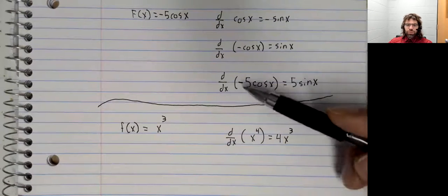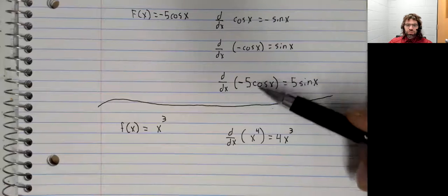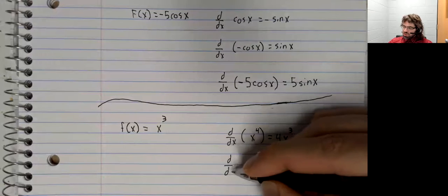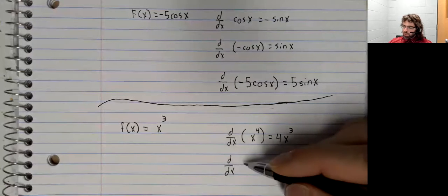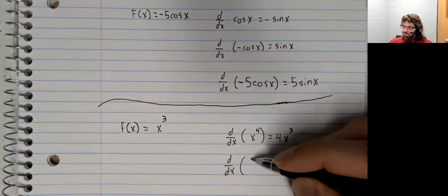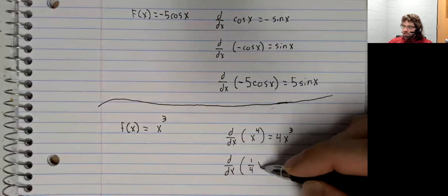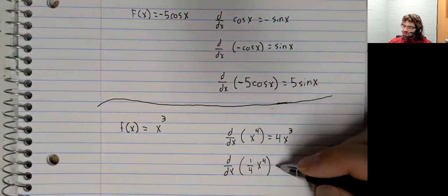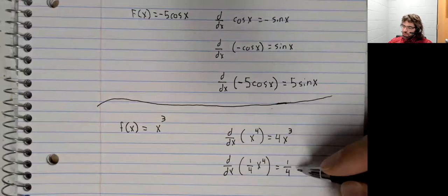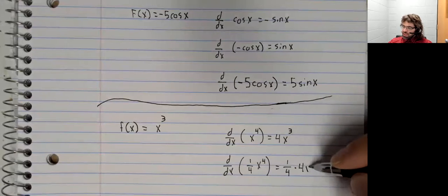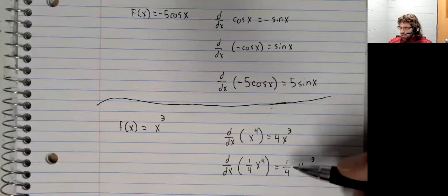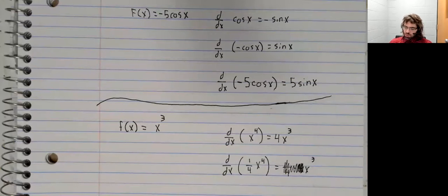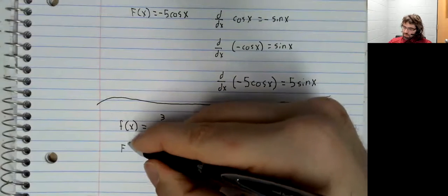We can, however, use the same trick we used before. Constants just sit there when we take the derivative. So if we put a one-fourth in front of x to the fourth, that would still be there when we take the derivative. And then the one-fourth and the four would cancel. So we've worked out an antiderivative.